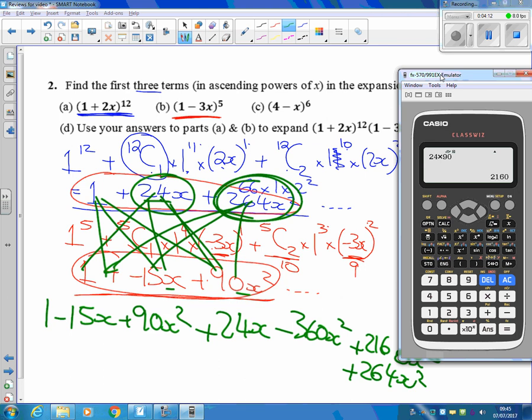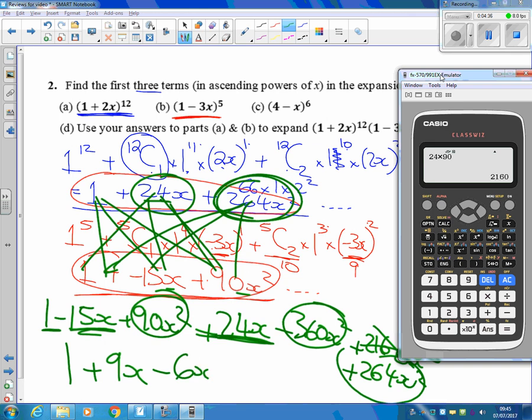So I've got plus 264x squareds. Right, I'm going to ignore those x cubeds now. I'm just going to go, so what have I got? I've got a 1 here, I've got minus 15 plus the 24, so I've got plus 9x's. And then putting all of these x squareds together here, I've got a grand total of the x squareds there. Isn't it just minus 6 altogether there then?